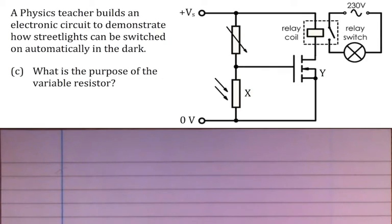So, in this case, how this variable resistor is operating, the variable resistor is basically setting the brightness level at which the MOSFET conducts, and therefore the streetlights turn on.